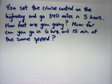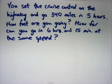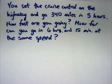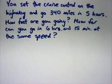In this video, we're going to focus on this problem that you see right here. Instead of doing one topic at a time in a logical sequence, I want to, within each video, as much as possible, focus on all the concepts in the title of the sub-series at once. So what's this problem here? You set the cruise control on the highway and go 340 miles in five hours. How fast are you going and how far can you go in six hours and 15 minutes at the same speed?